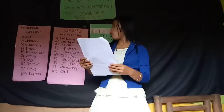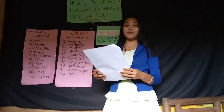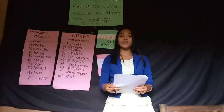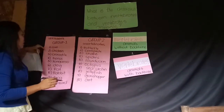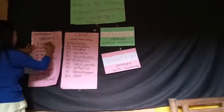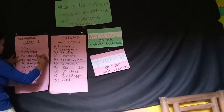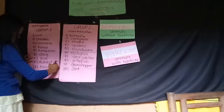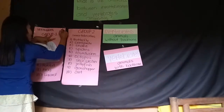Group one's activity is to list down ten examples of vertebrate animals. Cat, chicken, crocodile, horse, kangaroo, dog, rat, rabbit, frog, lizard. Okay, very good. The score of group one is ten over ten.